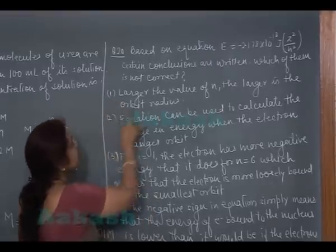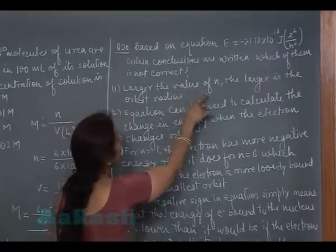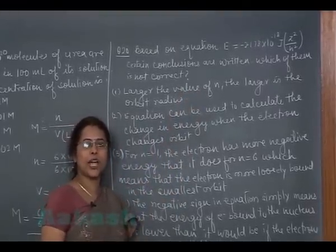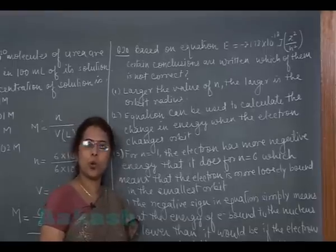The first option is: larger the value of n, the larger is the orbit radius. That is true because radius is directly proportional to n^2.